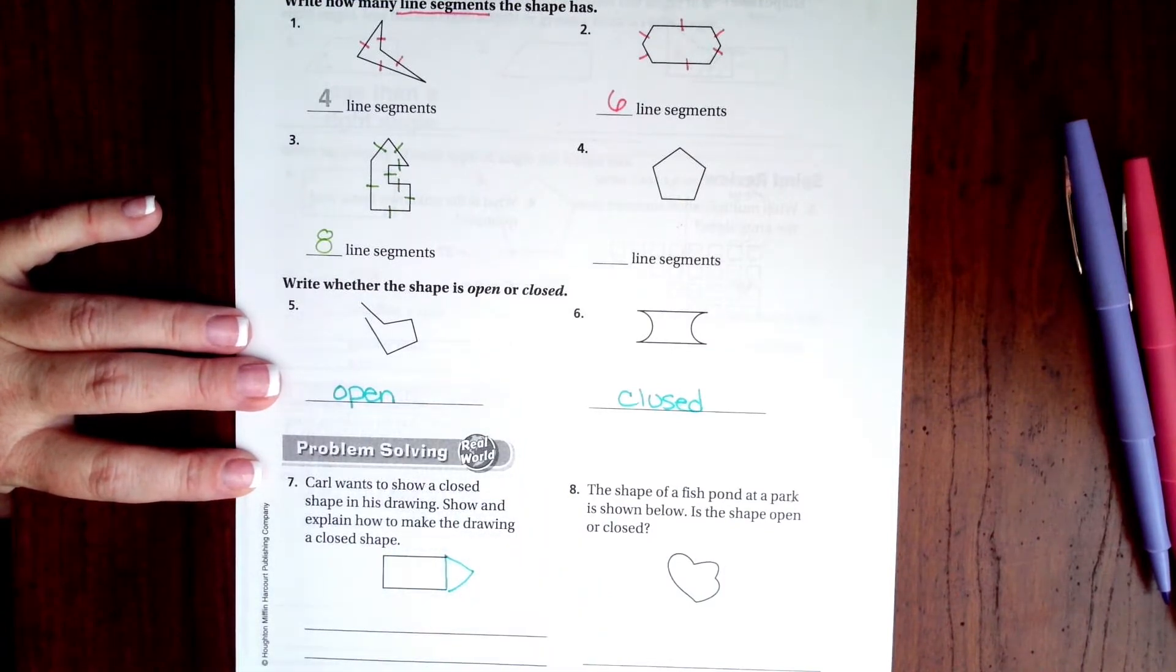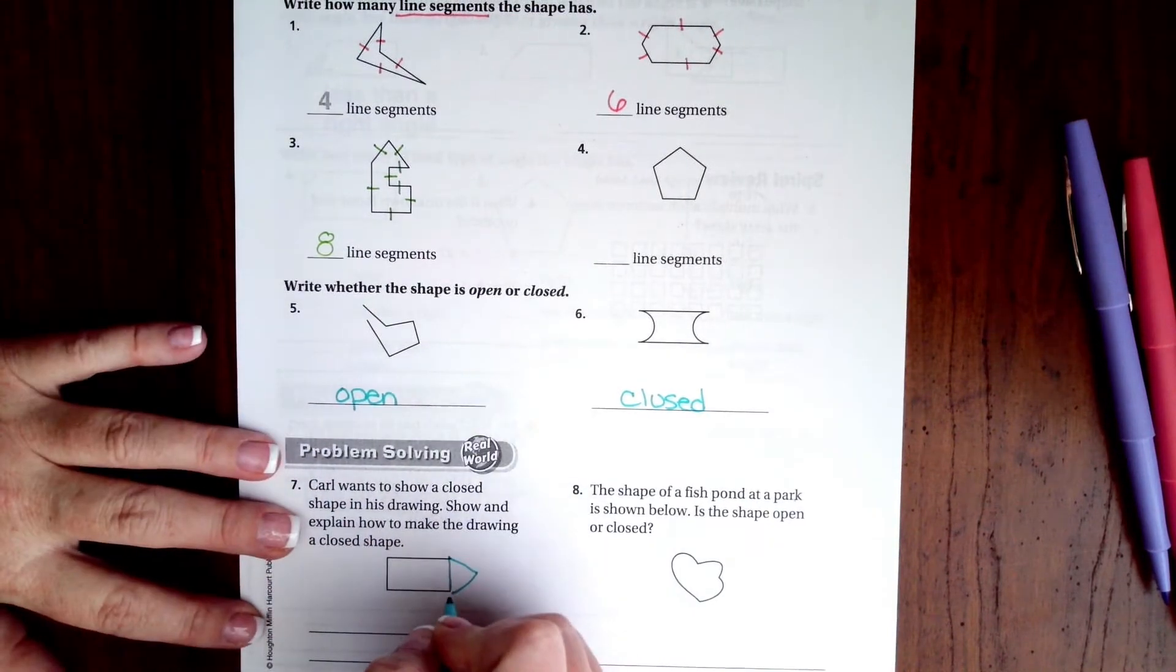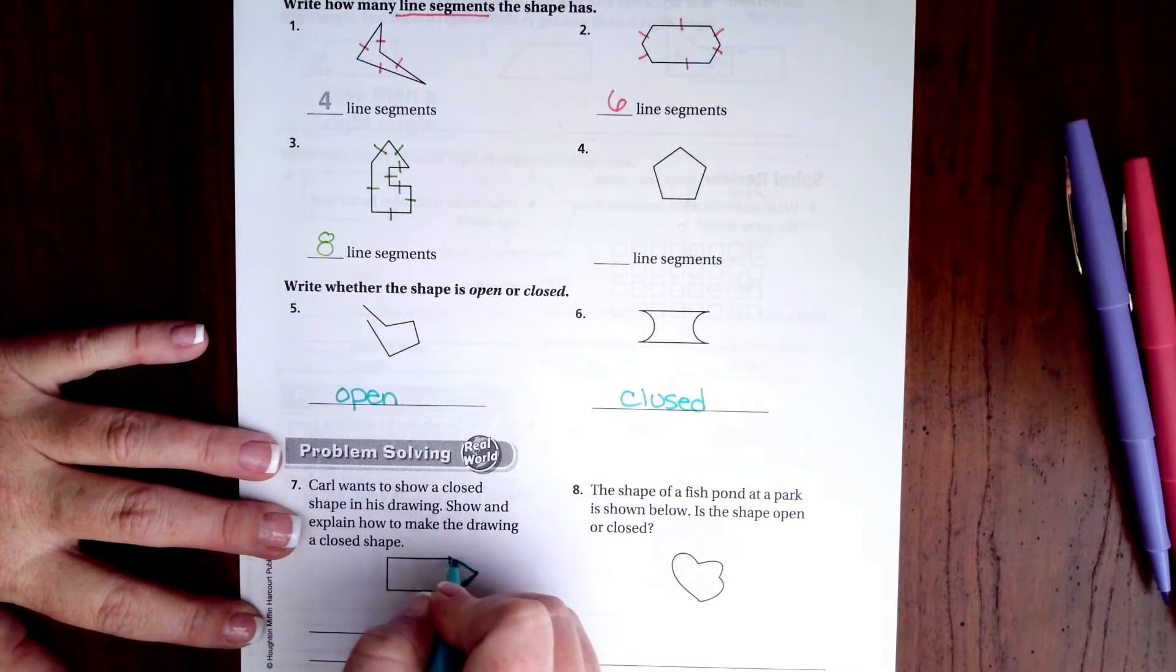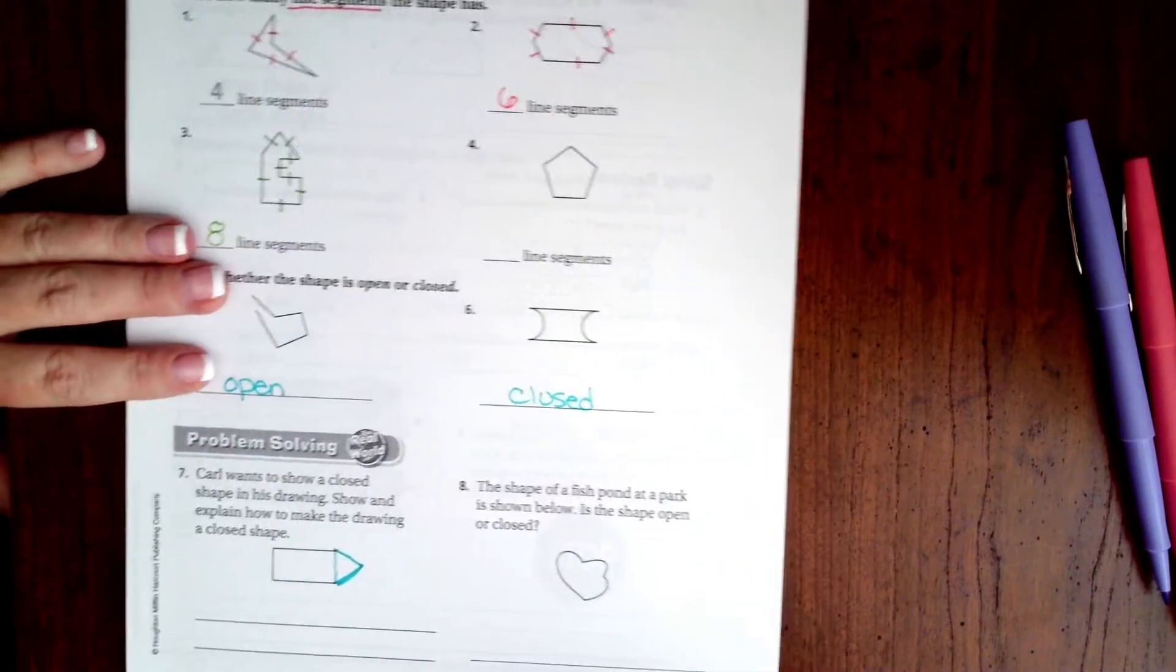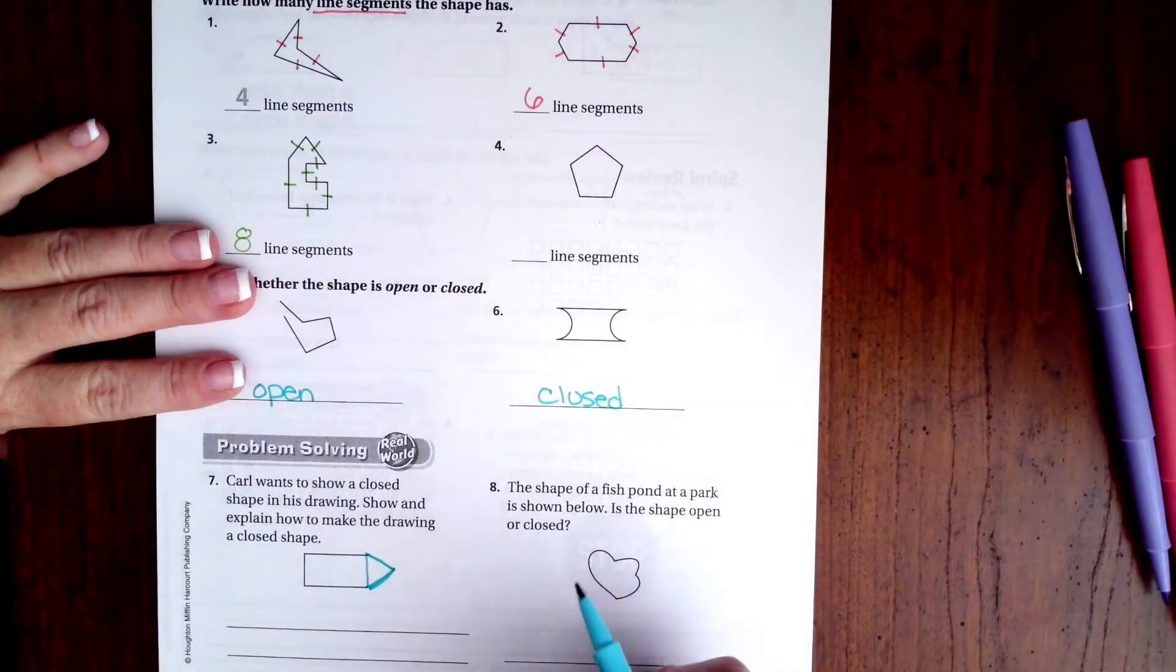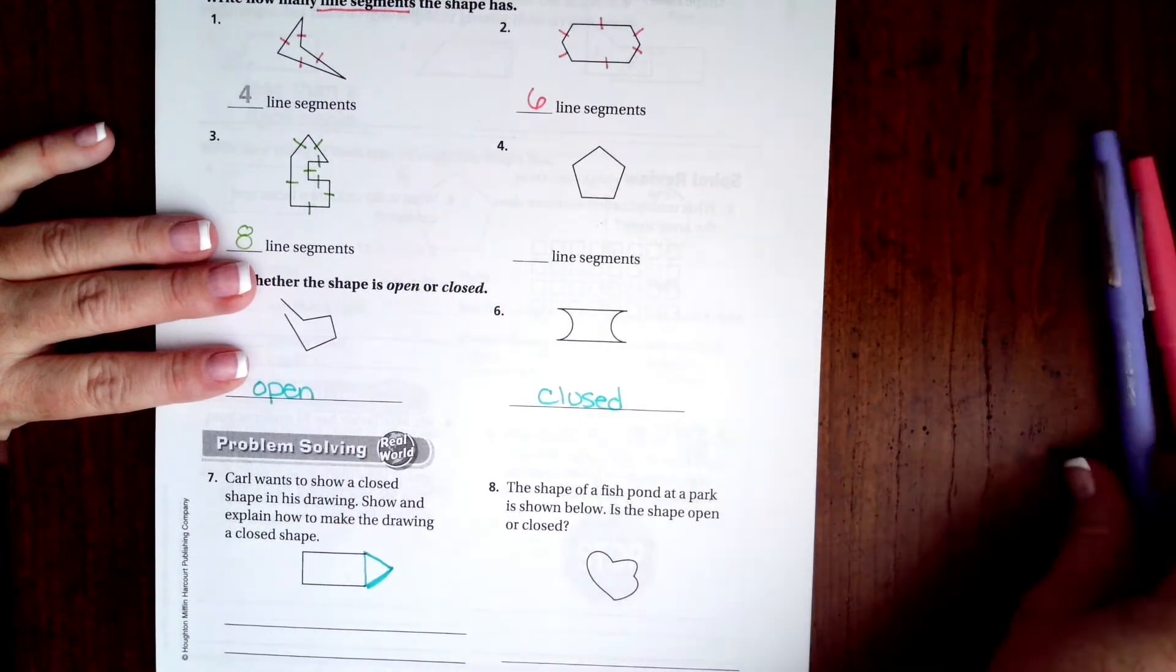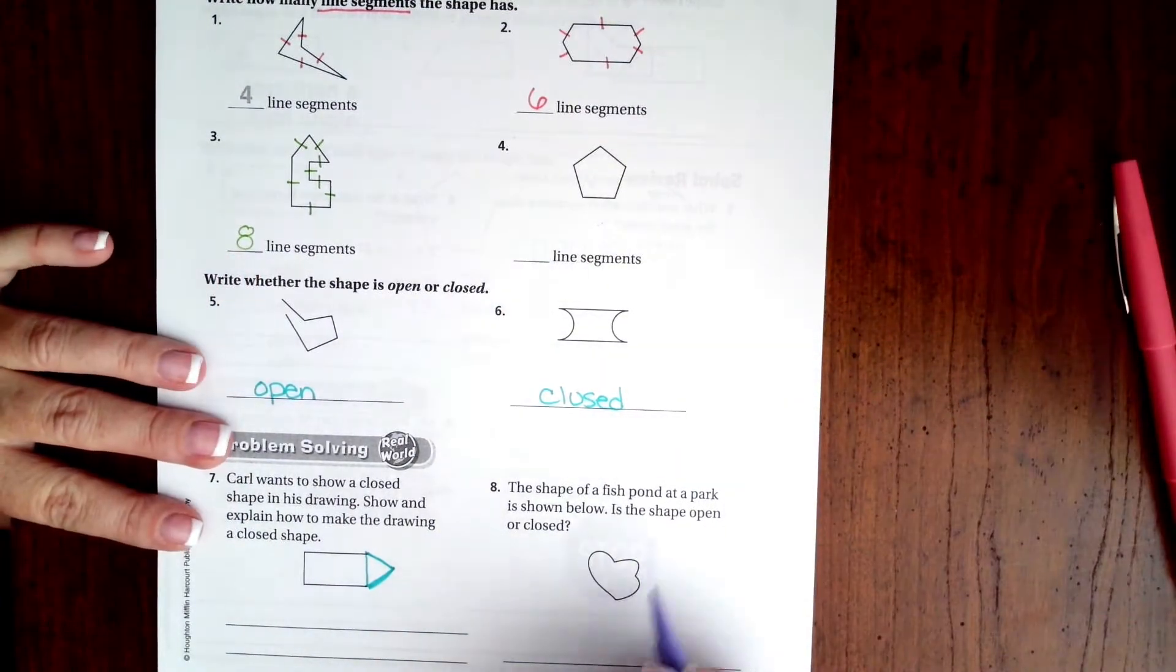It wouldn't have that blue line, but it would still be a closed shape because the sides all meet. All right, so go ahead and show and explain that in words. You guys can totally do that. The shape of a fish pond at the park is shown below. Is the shape open or closed? Well, there's no openings there, so it is closed.